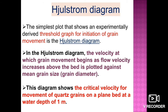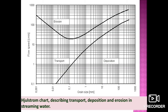In the Hjulström diagram, the velocity at which grain movement begins — as flow velocity increases above the bed — is plotted against mean grain size or grain diameter. This diagram shows the critical velocity for the movement of quartz grains on a plain grain bed at a water depth of one meter.